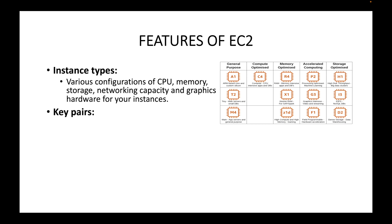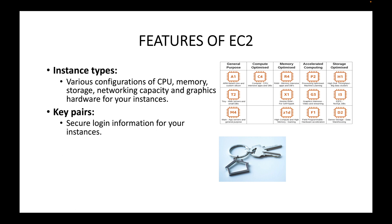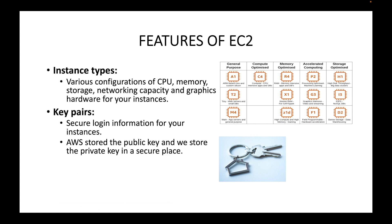Then you have key pairs. Whenever you want to log in to your server, EC2 by default uses key pairs for authentication — this is your secure login information to connect to your instances. For example, if it's a Linux machine and you want to do an SSH connection, we use key pairs for that. By default, EC2 does not support password authentication. AWS stores the public key and the user stores the private key in a secure place. When you want to connect to the server, you provide the private key to authenticate.